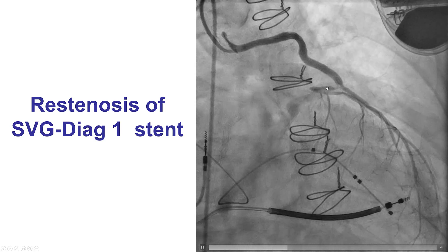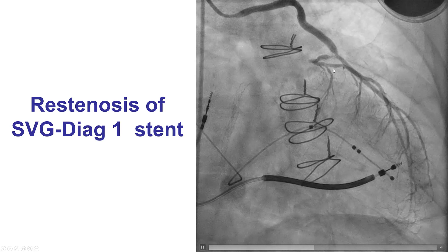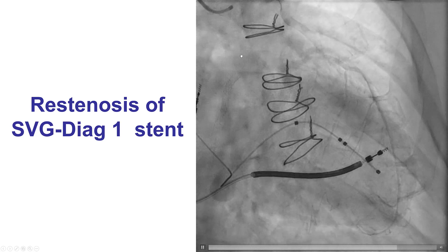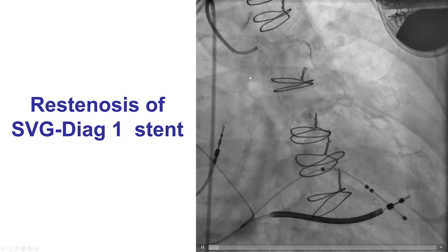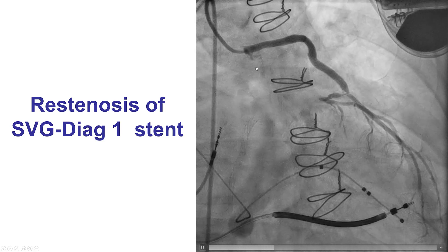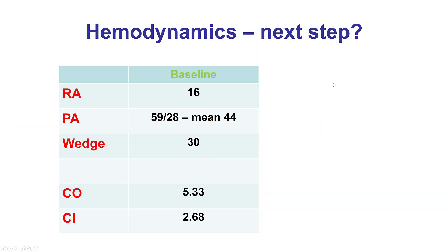The vein graft to diagonal unfortunately had significant in-stent restenosis of the previously placed stent. One treatment option would be to treat that lesion; another option would be to recanalize the native left anterior descending artery chronic total occlusion. These were the patient's hemodynamics at the time of presentation: right atrial pressure of 16, a wedge of 30, and a mean PA of 44 mmHg.